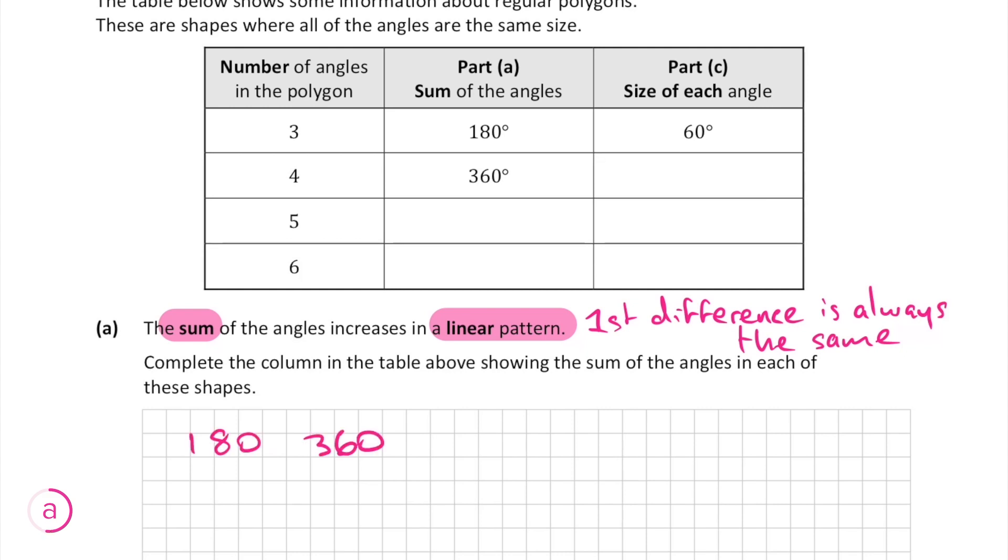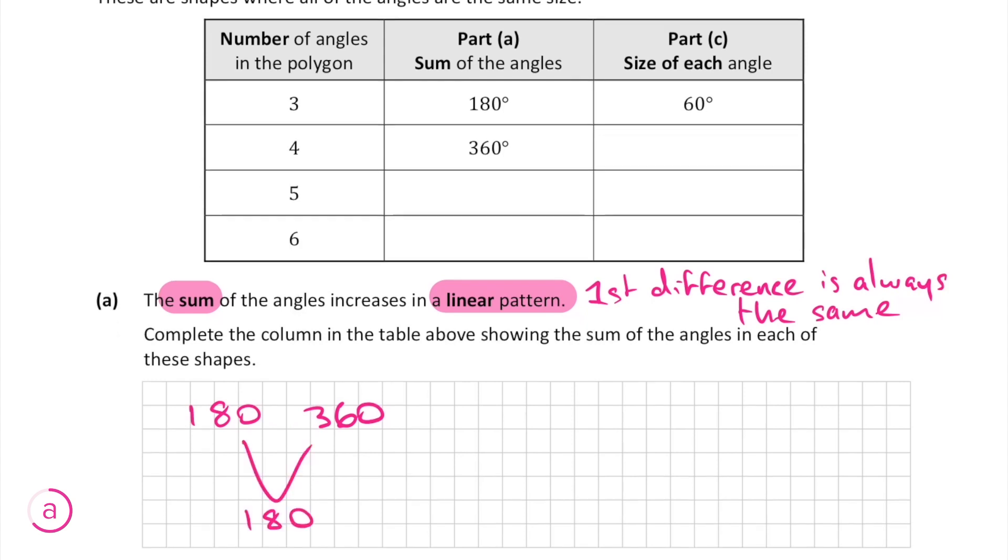We're already given the sum of the angles for the first two polygons. So our first difference is just the difference between these two numbers. Since the difference is 180, we can work out that 180 is the first difference.